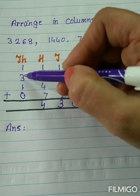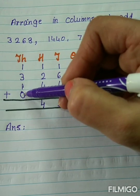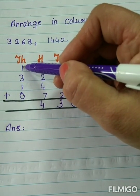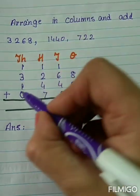So let's add the thousands place. 3 plus 1, 4. 4 plus 0, again 4. But we have 1 carry over here. So add the carry over which gives us 5.